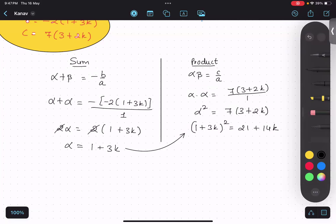So 1 plus 3k whole square equals to 7 into 3, 21 plus 14k. And over here I will apply the identity. 1 square plus A square plus B square plus 2ab. That means 6k equals 21 plus 14k. So keeping everything to the left hand side.